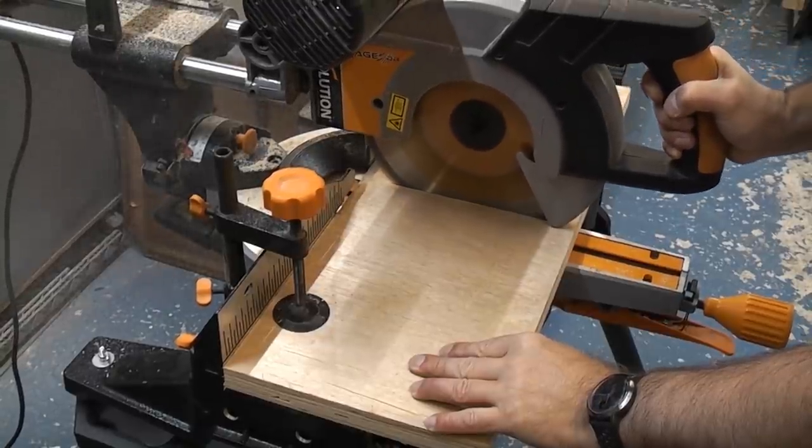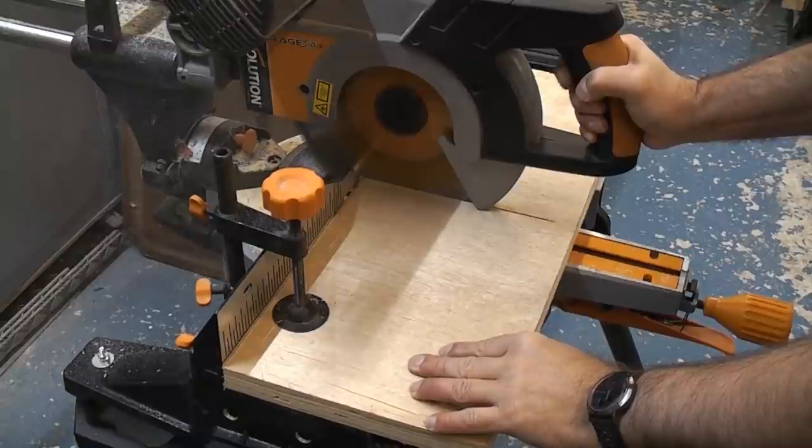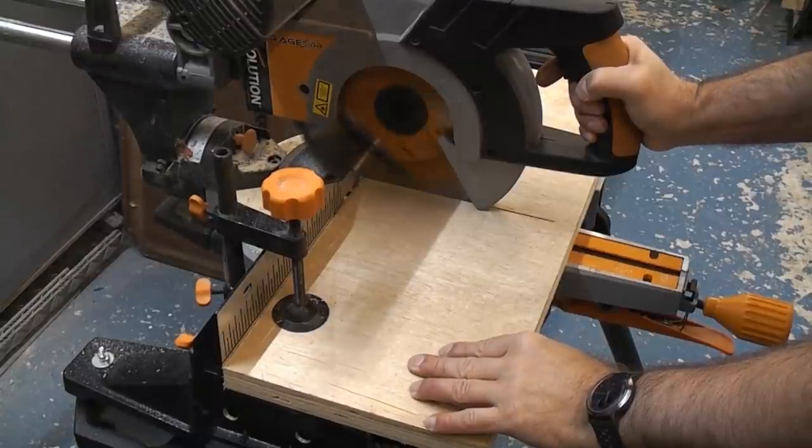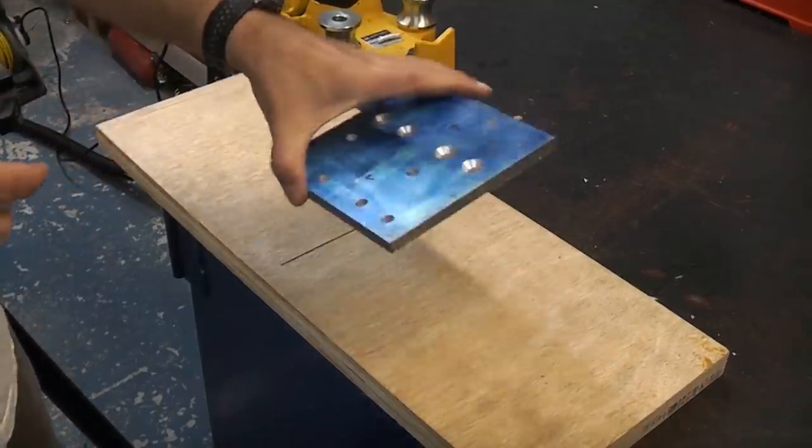The Rage 3 sliding mitre saw can be used to cut wood, metal, or plastic all with the same blade, so cutting aluminum like this is not a problem.